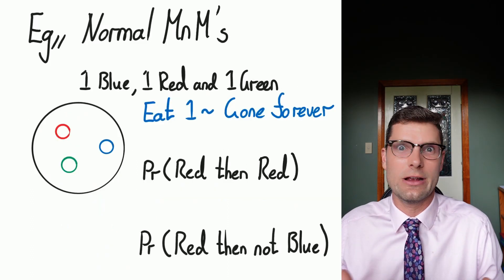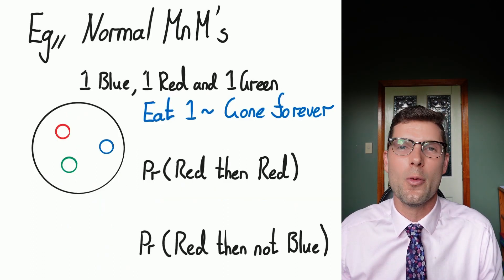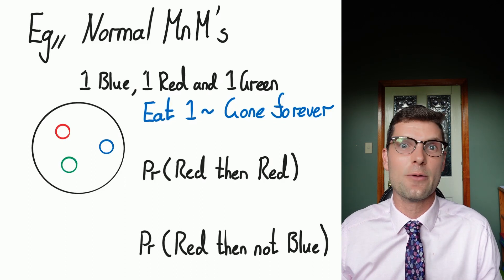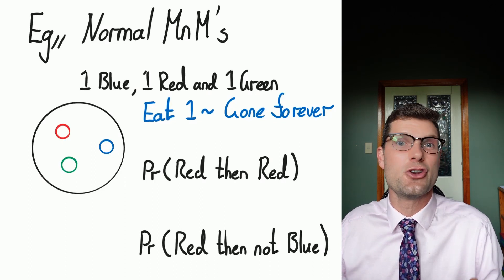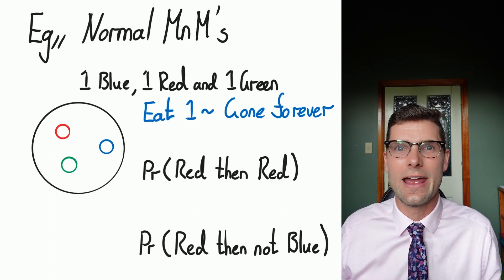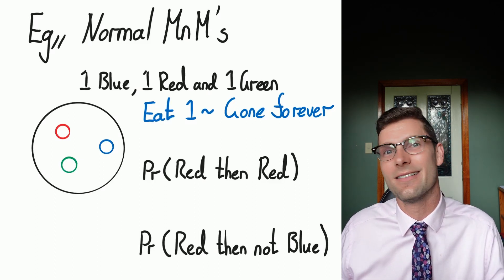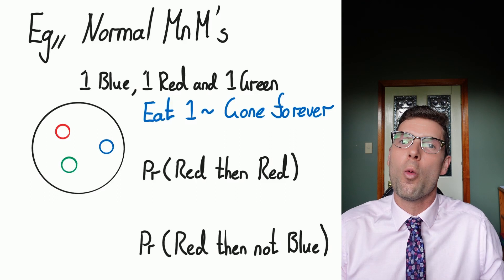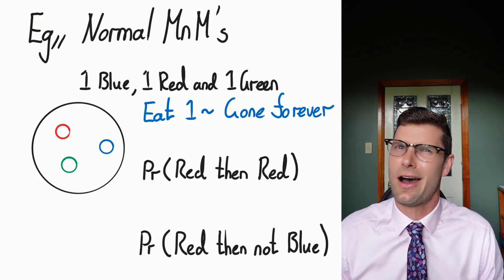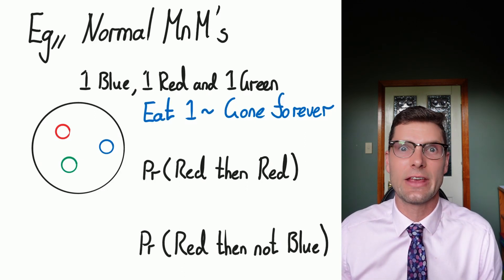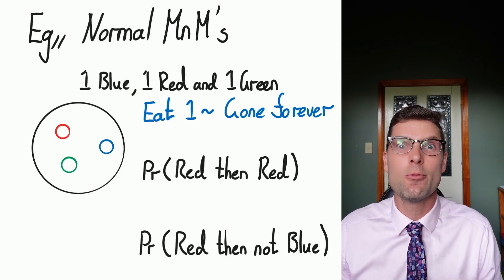In a much more real life example, if you've got a normal bag of M&Ms - same thing again, we've got one red, one green, one blue. If you eat one of them, it's not replaced. It's just gone forever, unless you buy another bag down the line. So this time, what is the probability of me getting a red and then a red? Pretty quickly you'll go, I'm not sure if that's going to happen. And we'll see why.